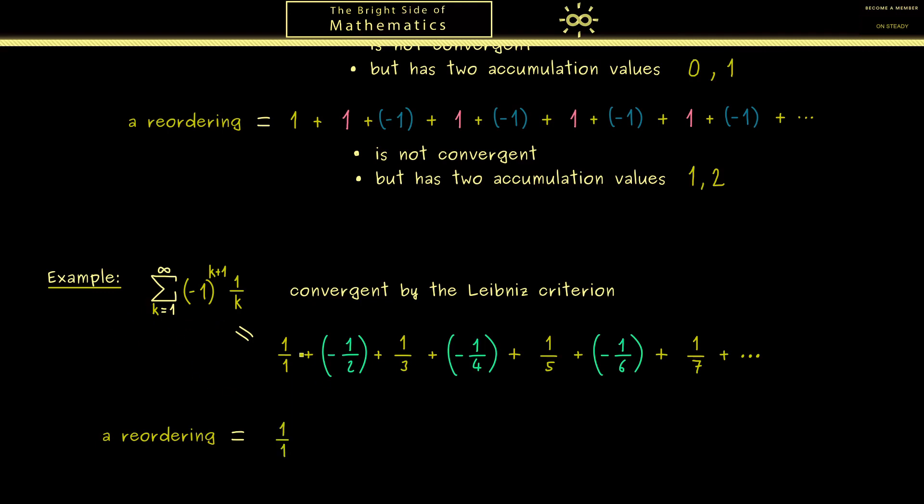What we will do is take two positive numbers before the next negative number comes. Hence first we add 1 over 1 plus 1 third, and then we subtract 1 half. Then in the next step we take these two positive numbers and subtract 1 quarter. And with this rule we just continue. Of course, the important thing you should note is that we don't miss any numbers involved and we don't add other ones. For this reason we call this a reordering of this series.